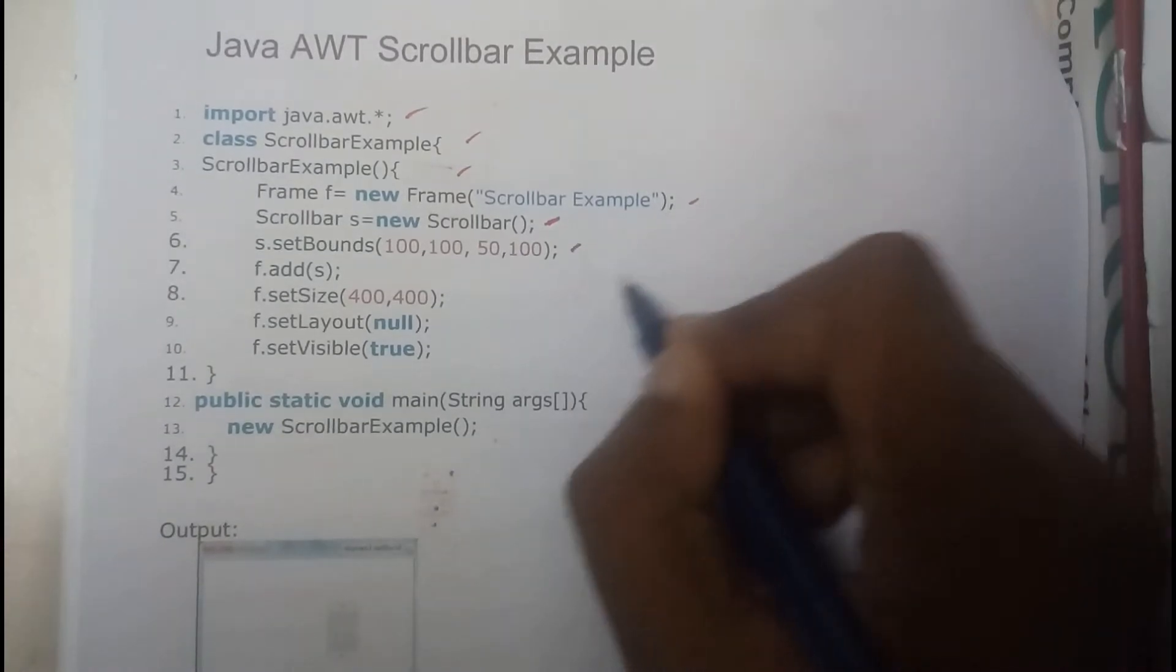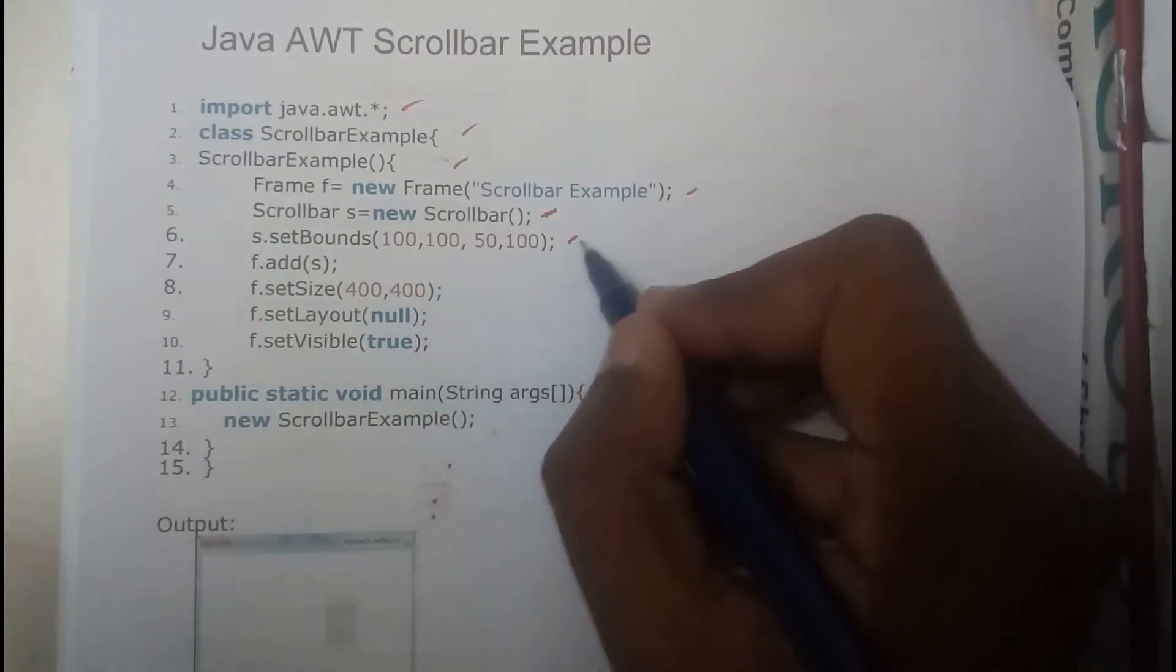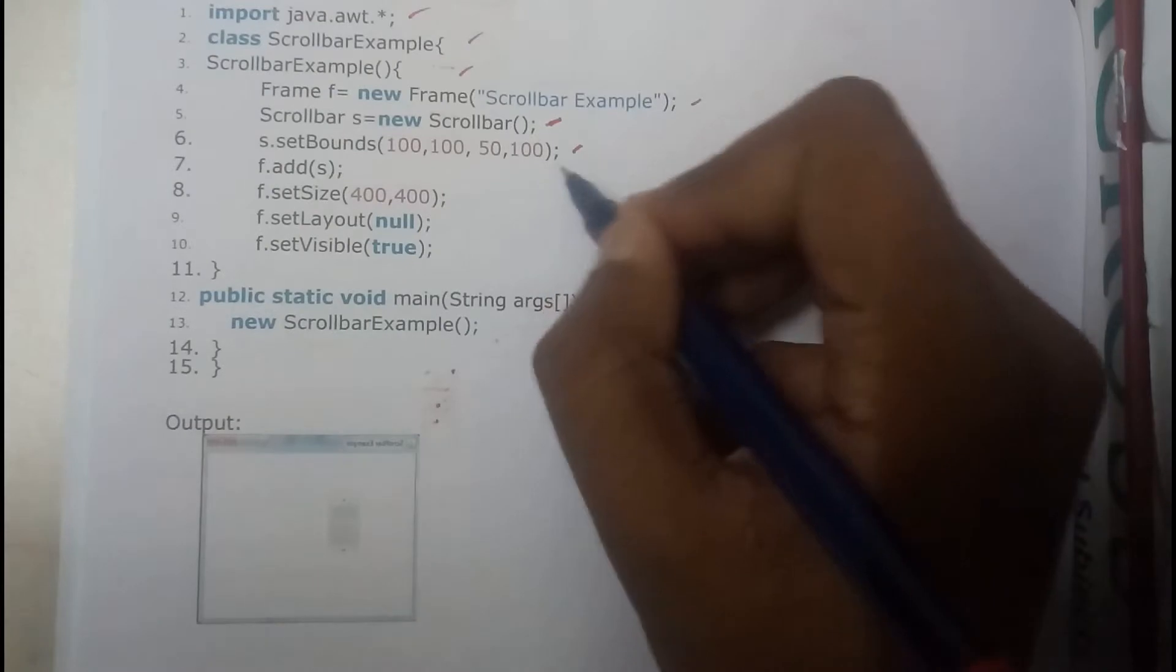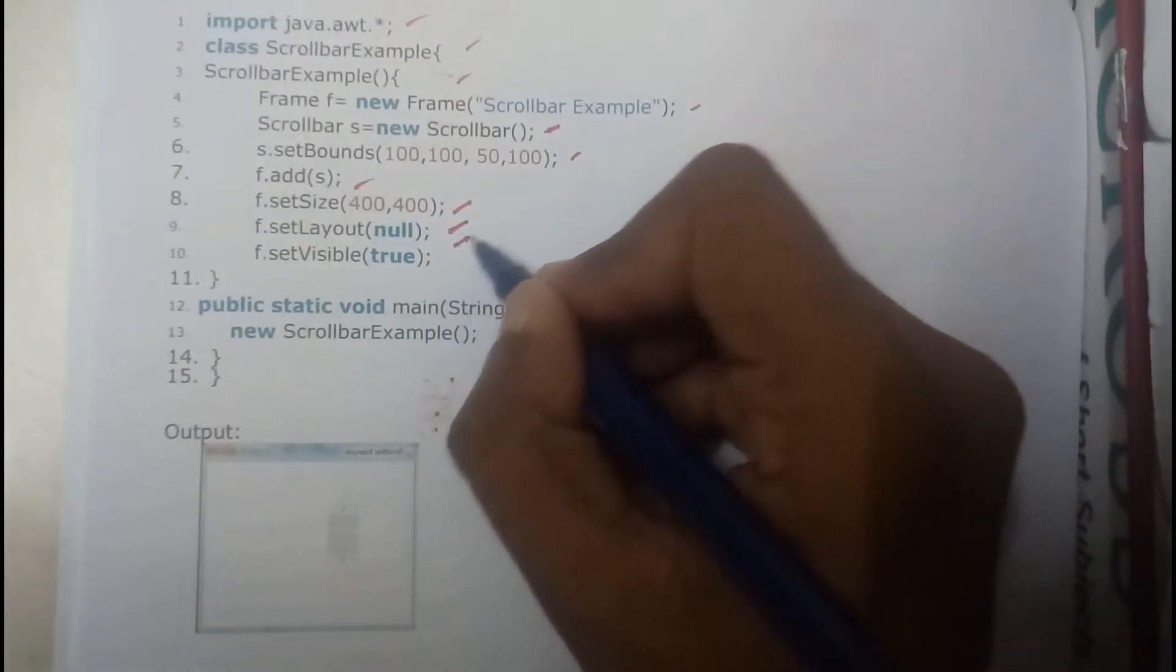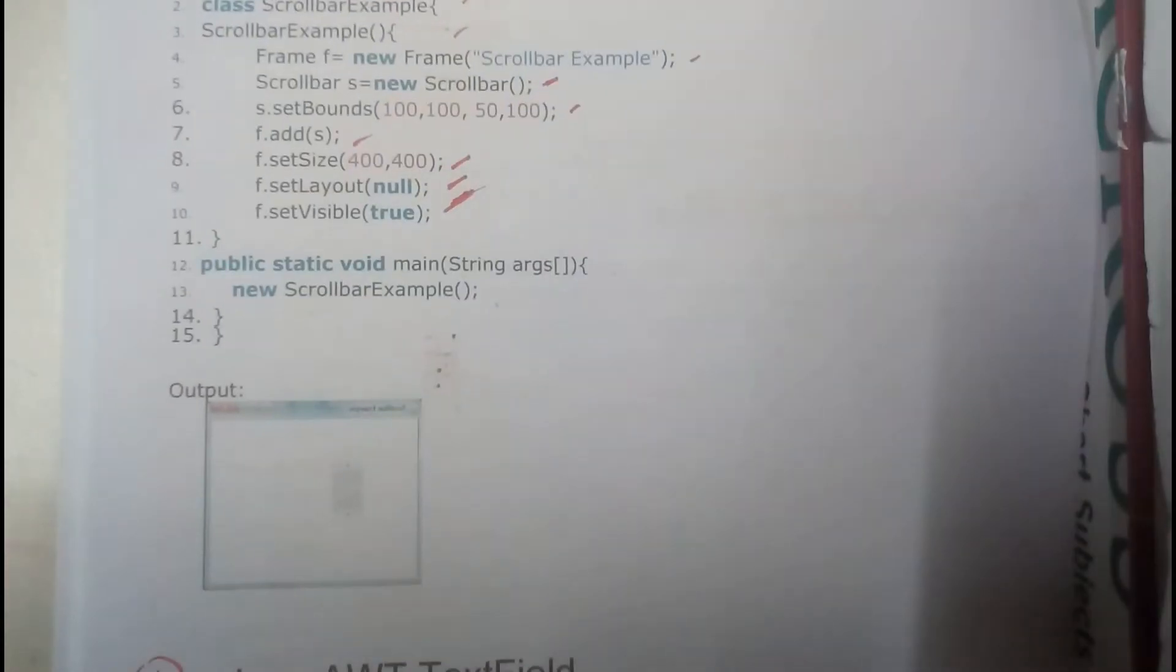We have set its boundary size. And then we added this scrollbar into our frame. We set our frame size. We set our frame layout to null. And then we set our frame visibility to be true.